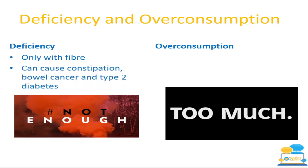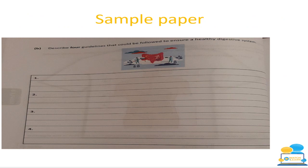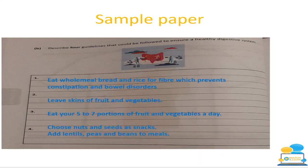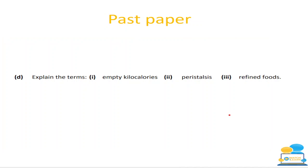A sample paper question asks: describe four guidelines to ensure a healthy digestive system. Answers: eat wholemeal bread and rice to prevent constipation and bowel disorders; leave skins on fruit and vegetables; eat five to seven portions of fruit and veg a day (refer to the food pyramid); choose nuts, seeds, and snacks; add lentils, peas, and beans to meals as a good source of fiber and low biological value protein.